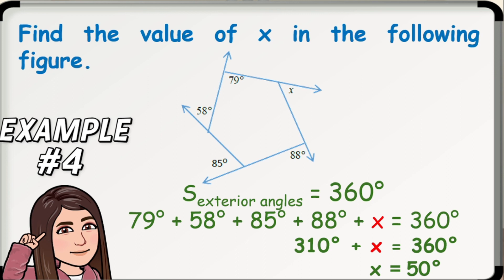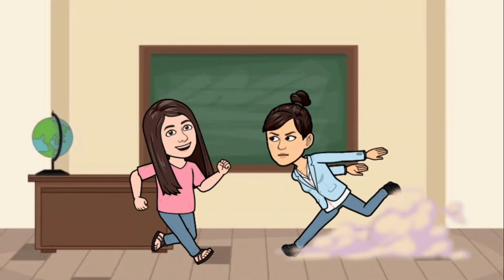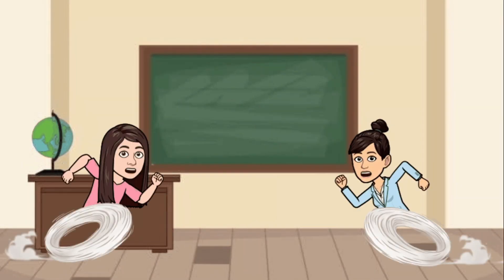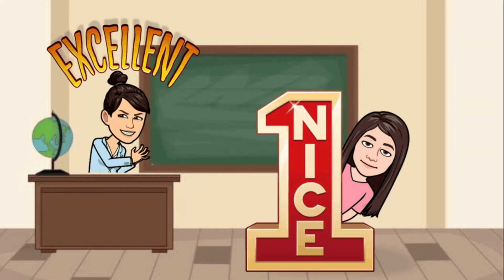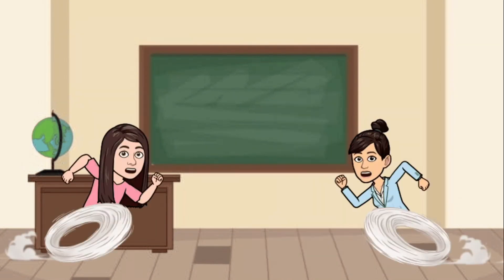Therefore, the value of X in the figure is 50 degrees. For your drill, answer the following questions considering it is a regular polygon. Comment your answers with your name, school, and section. That ends our lesson today. We hope you learned something. See you on our next episode, Cucket Angels. Keep safe!